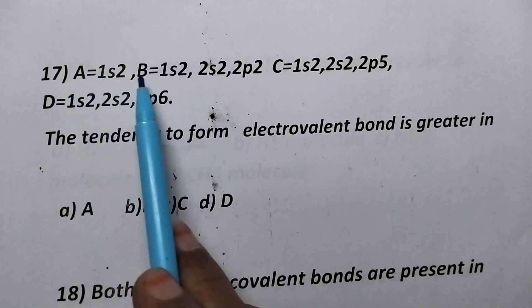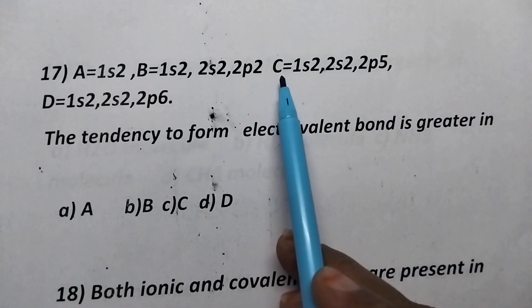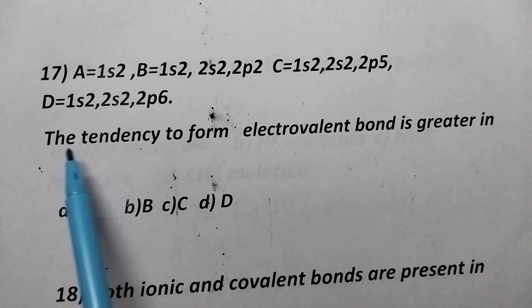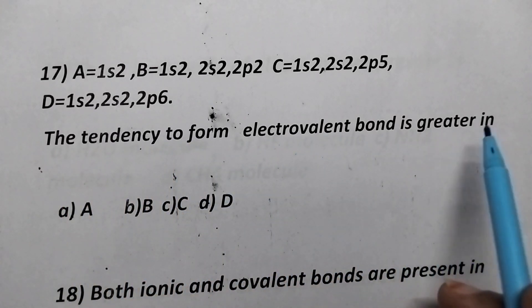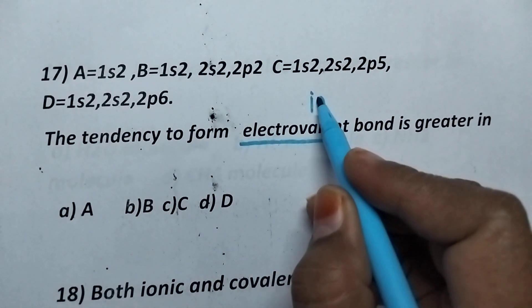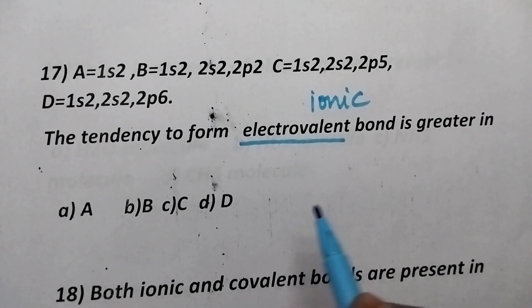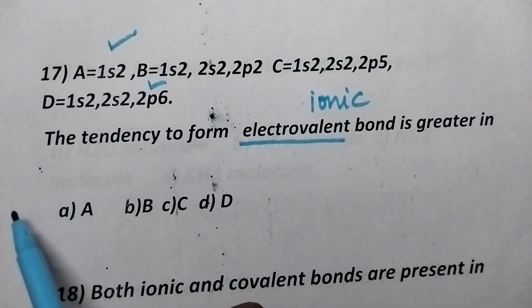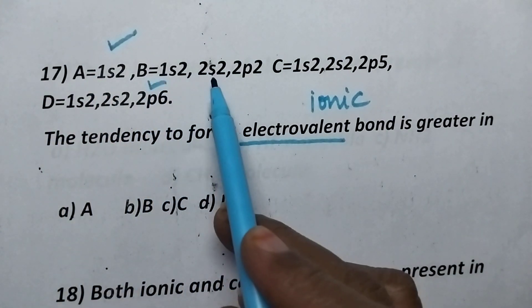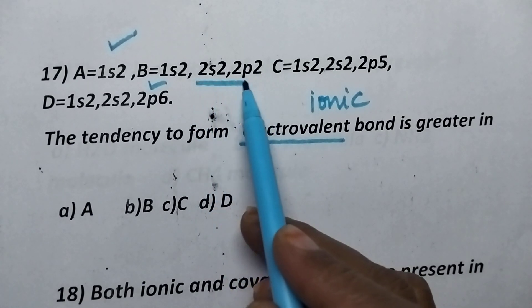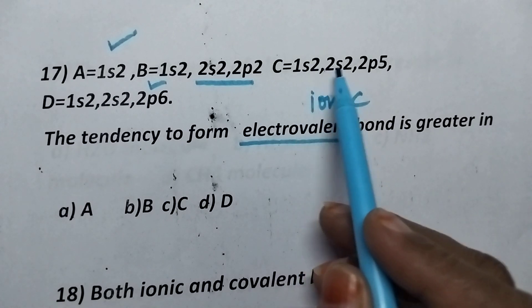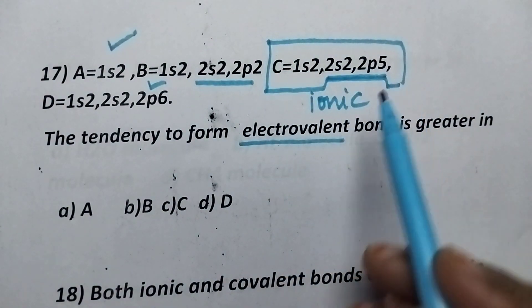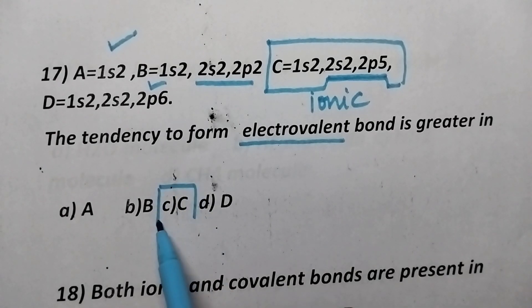A is having 1S2 configuration. B is having 1S2, 2S2, 2P2 configuration. C is having 1S2, 2S2, 2P5 configuration. The tendency to form electrovalent bond is greater in. Electrovalent bond means it is nothing but ionic bond. In general, the electropositive or electronegative atoms will form ionic bond more readily. So, coming to the A and D, they are having the noble gas configuration. They do not form chemical bonds. Coming to the B, it is having 2S2, 2P2 configuration. So, it forms covalent bond. So, coming to the option C, its configuration is 1S2, 2S2, 2P5. That means it is short of only one electron and hence compound C is capable of forming ionic bond more readily. So, here option C is the right answer.